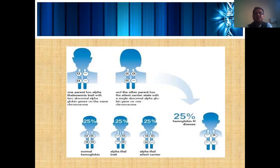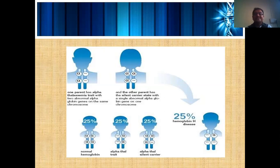There is a 25% chance that normal hemoglobin is found, and when the second pair from the man crosses with the first pair from the woman, the alpha trait results. The alpha silent carrier state can also result. And finally, there is a 25% chance that the neonate or fetus has thalassemia — where red blood cells are not properly formed and ready-made blood transfusion is required.